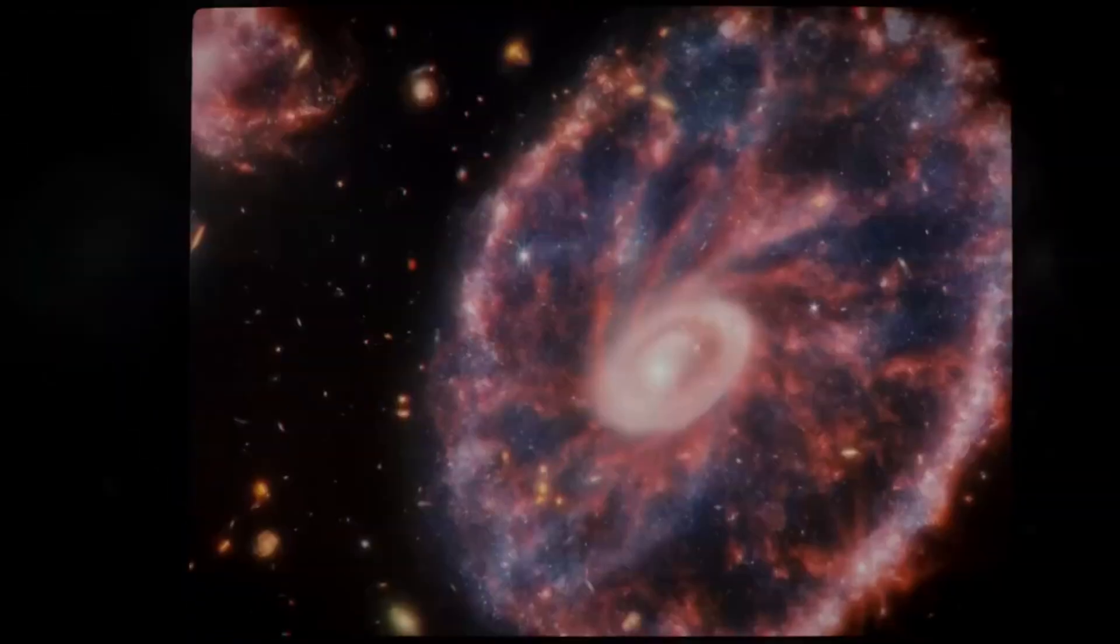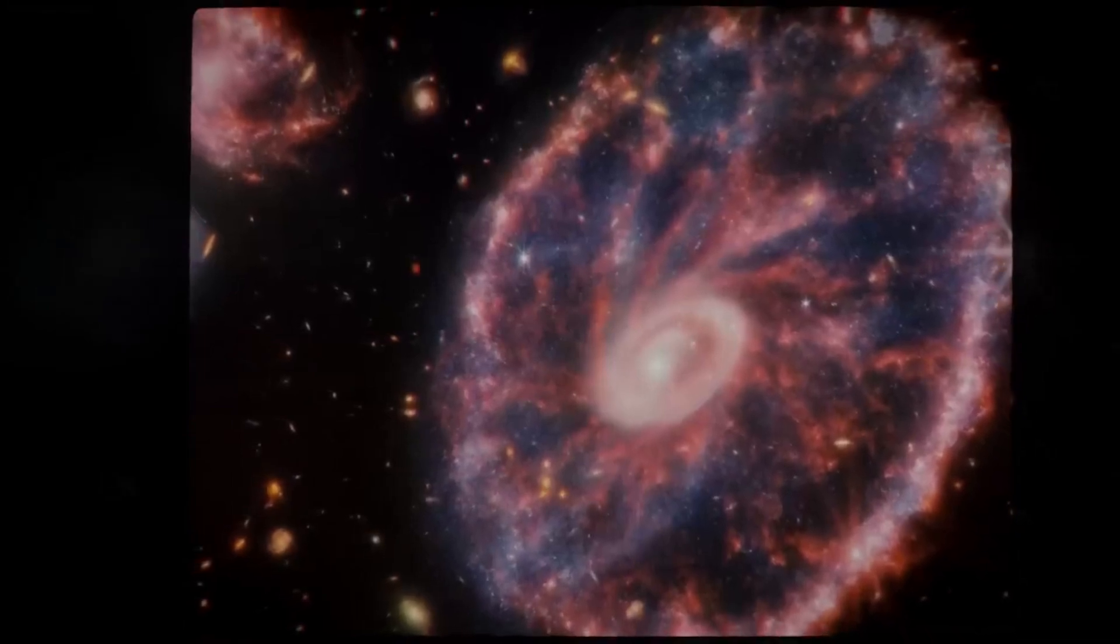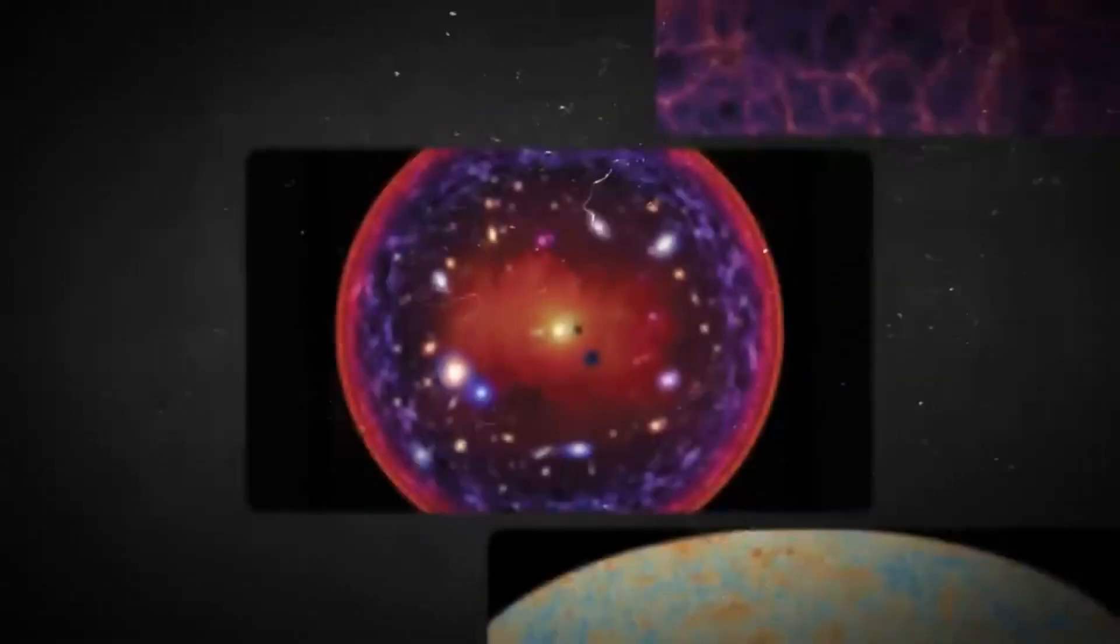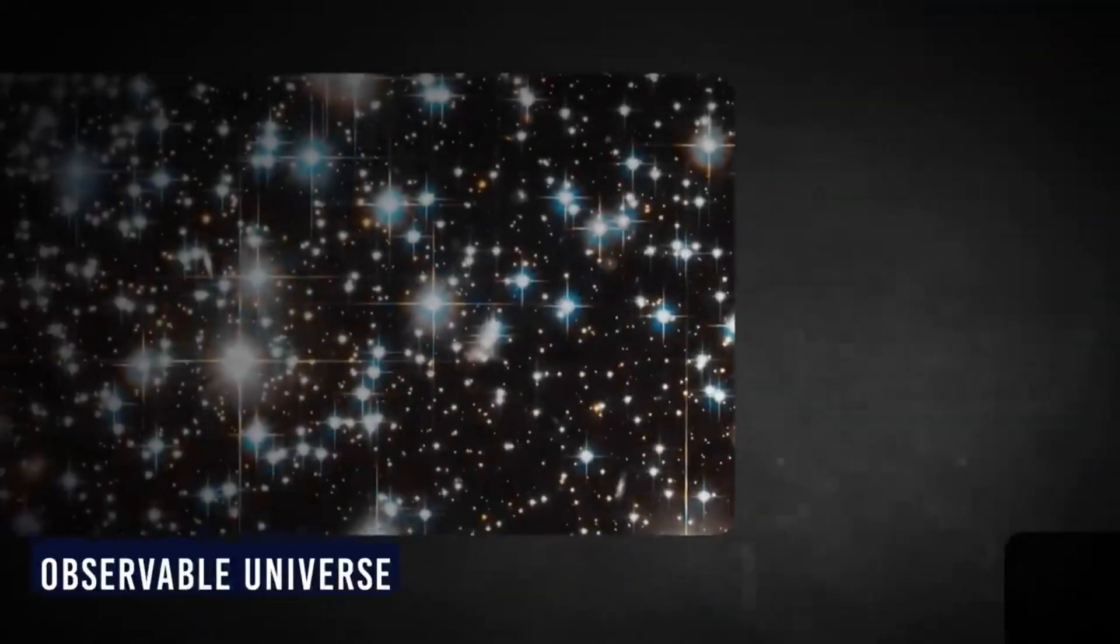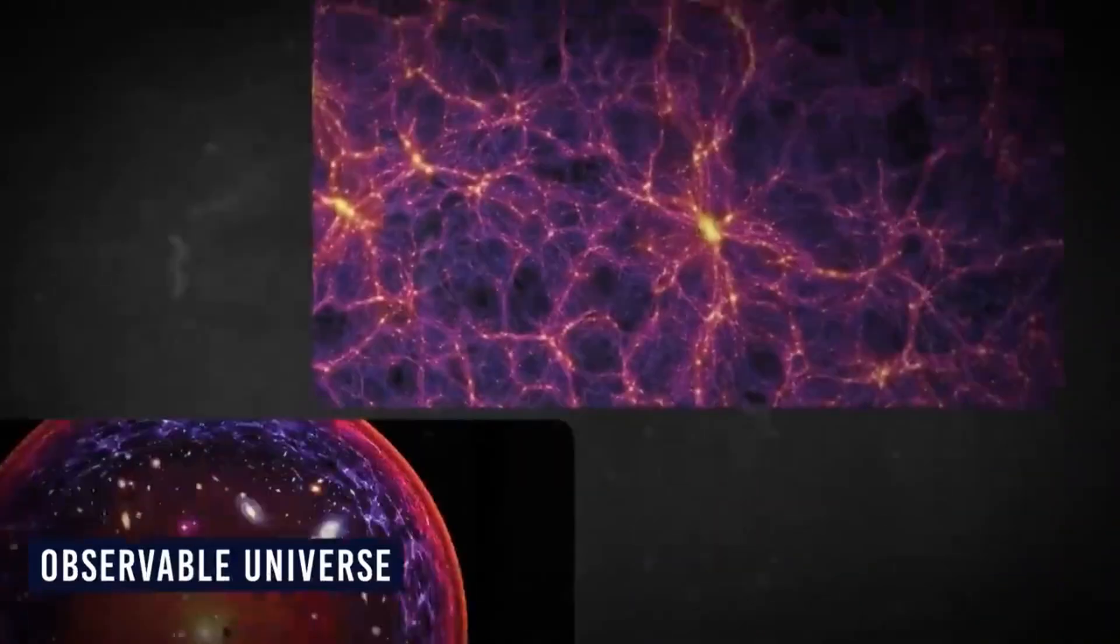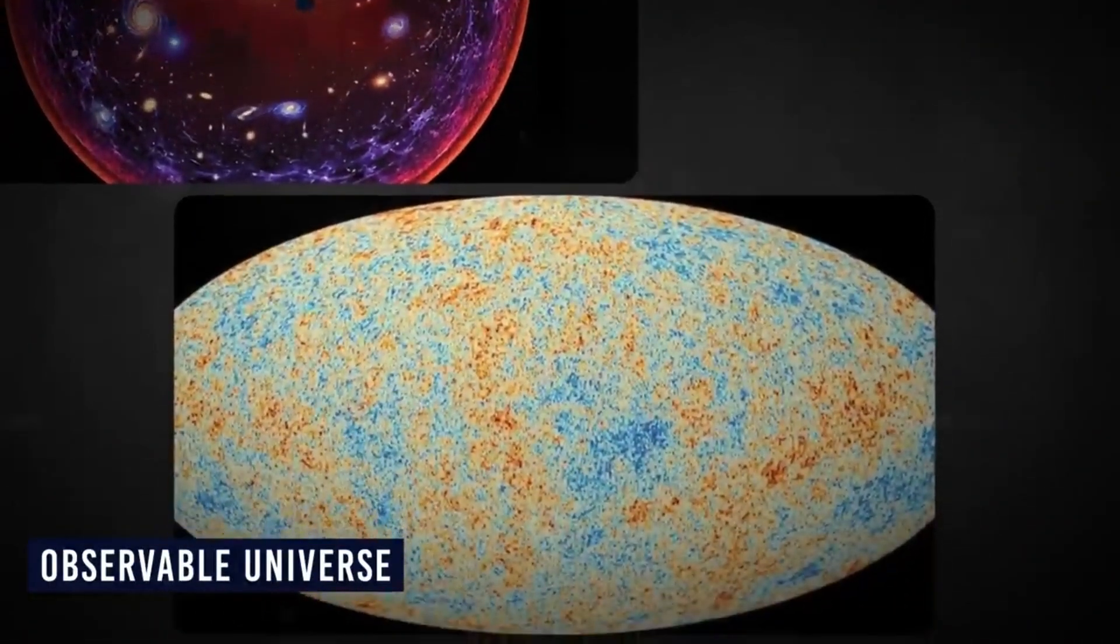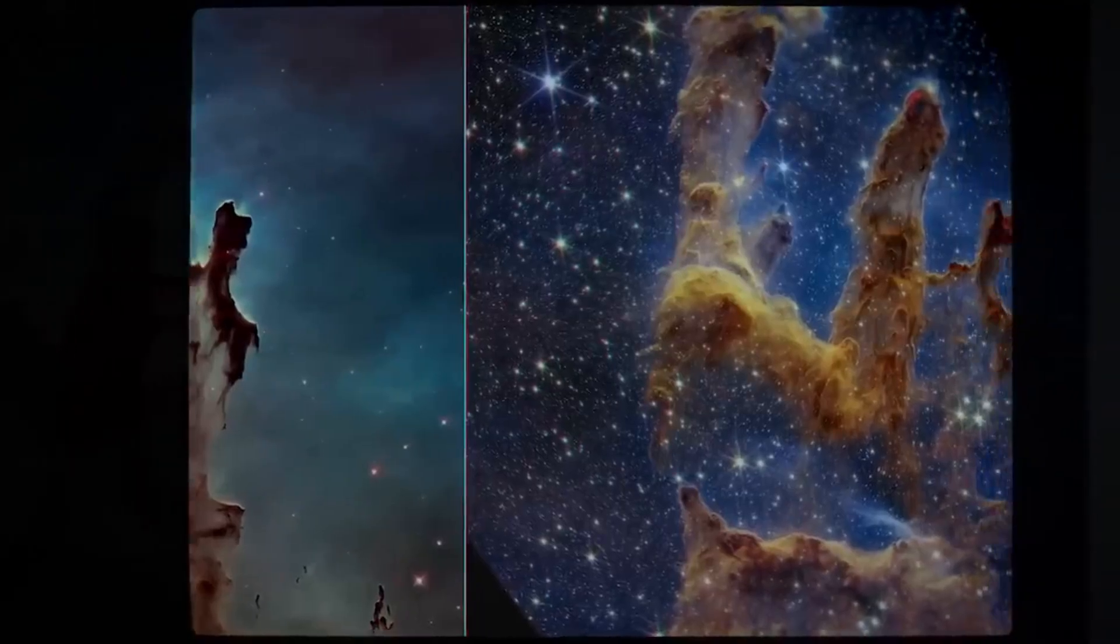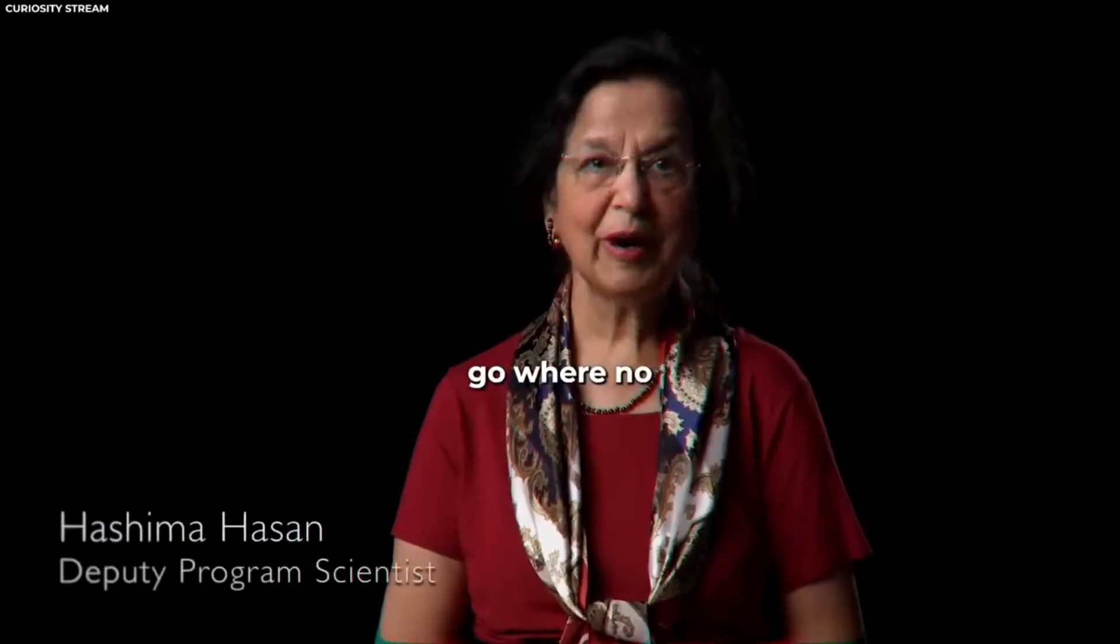When we talk about the edge of the universe, it's essential to understand the concept of the observable universe. The observable universe includes everything that we can see, measure, and study from Earth or our space-based telescopes and exploratory probes at the present time. It consists of stars, galaxies, and other celestial objects that are within our observational reach.